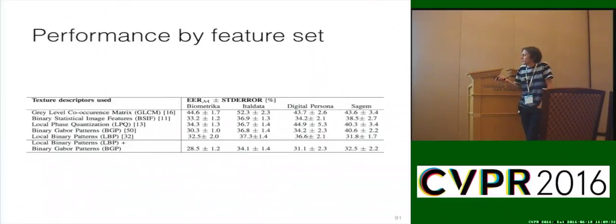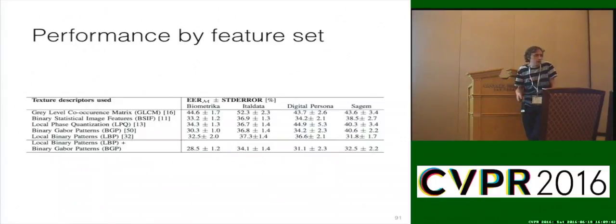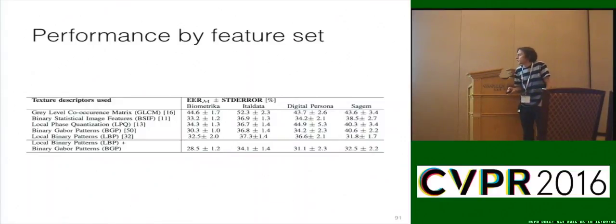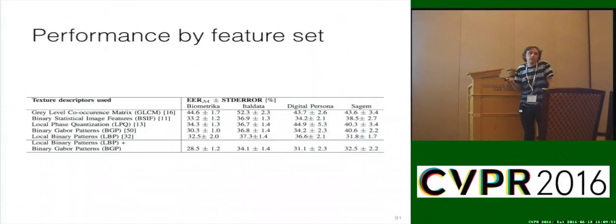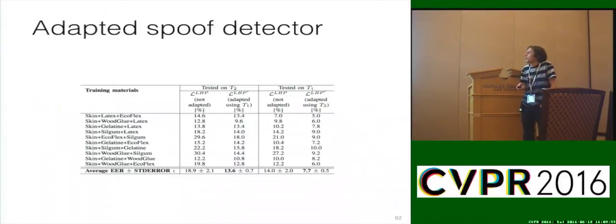Here is that bag of features. Some of these are not surprising: LBP, BGP, LPQ, B-CIF, GLCM — really basic hand-tuned features. The community is pivoting now to feature learning, but this work was done before that was rather prevalent. And so depending on your sensor, your performance can vary as well, so there are some other effects you have to account for.